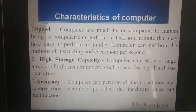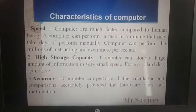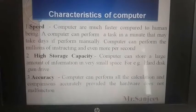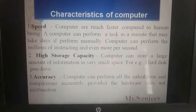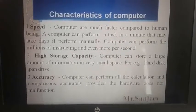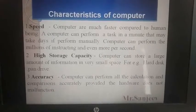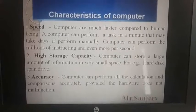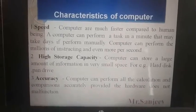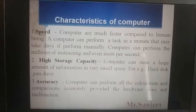First characteristic: speed. Computers are much faster compared to human beings. A computer can perform a task in a minute that may take days if performed manually. Computer can perform millions of instructions and even more per second. Computer کے اندر ہم جتنا بھی work کرتے ہیں، اس work کو speed سے کر سکتے ہیں۔ For example, MS Excel.